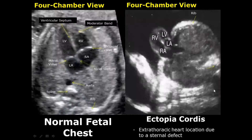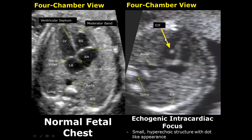Sometimes the heart may have an echogenic or hyperechoic dot-like structure present in the ventricle, attached to the interventricular septum. This is known as an echogenic intracardiac focus.